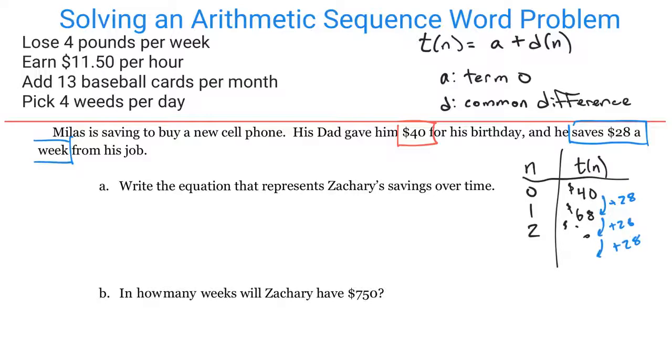For our rule, T(N), we have our term zero where we start, which is 40 - the $40 his dad gave him. Then we're adding 28 for every N weeks. So our formula is T(N) = 40 + 28N.